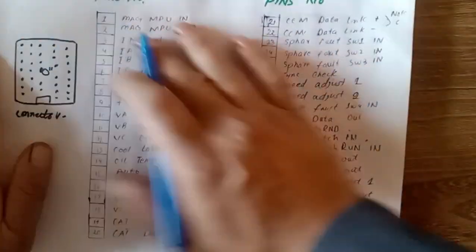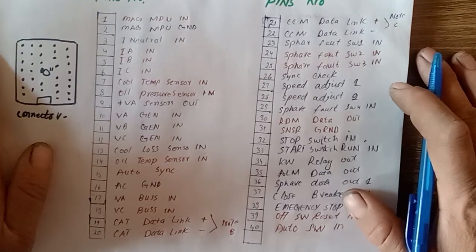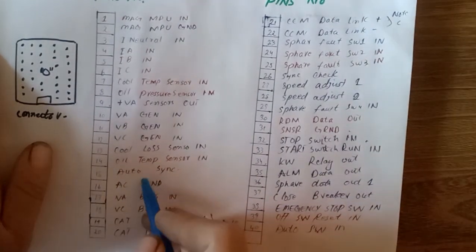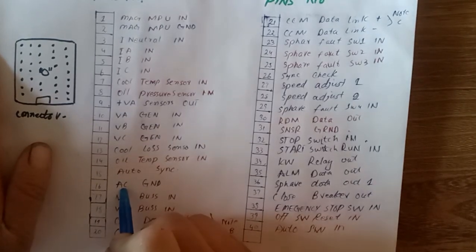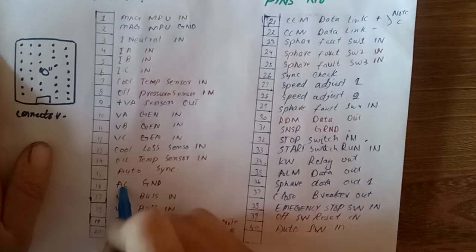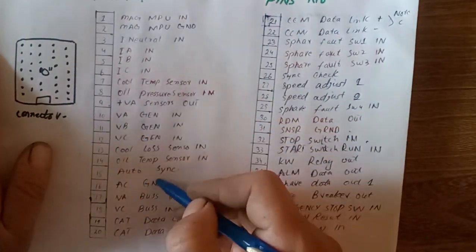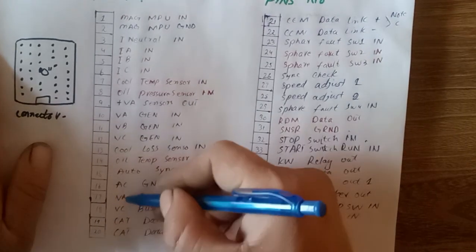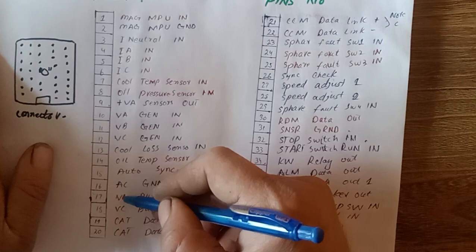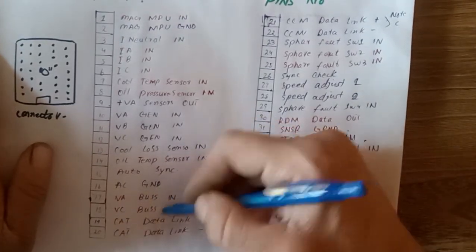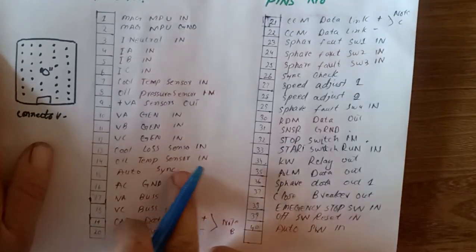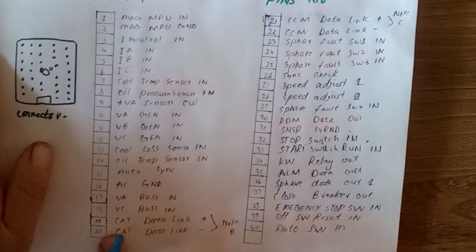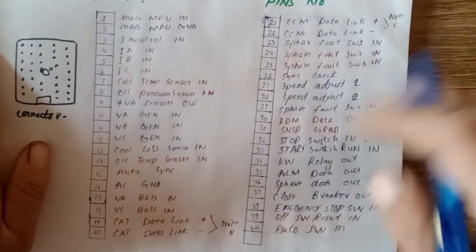AC ground - you can put your generator neutral wire here. There are three phases here and ground. Pins 19 and 20 are the data link for the communication system - ground and power.